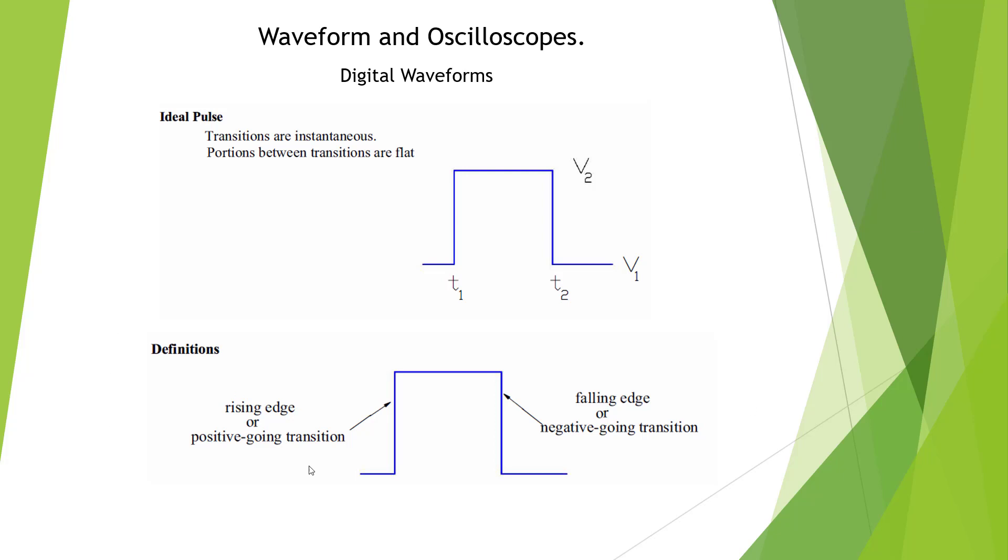Our definitions: here we have a rising edge, or positive going transition, from low to high. And the falling edge, or negative going transition, which would go from high to low. When we say low, it's zero volts. When we say high, it would be the maximum volts. TTL would be five volts.